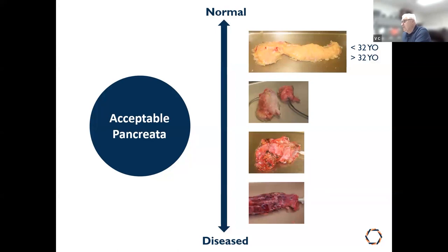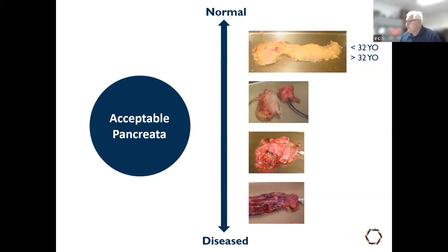The acceptable pancreas ranges from normal to disease. In the normal situation, it depends on age — donors younger than 32 have problems freeing islets from tissue, with mantled or embedded islets that don't separate on density gradient centrifugation. On the other end, chronic pancreatitis presents a triad of features: loss of acinar cells, significant fibrosis, and blocked or dilated ducts that make it difficult to infuse enzyme solutions.